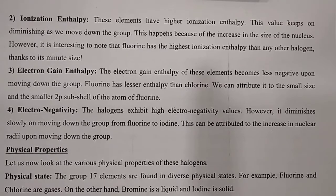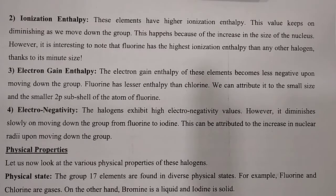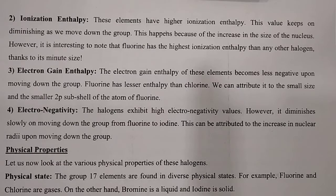Second point: ionization enthalpy. The minimum energy required to remove one electron from the valence shell is known as ionization enthalpy. These elements have higher ionization enthalpy, and this value keeps on diminishing as we move down the group because of the increase in the size of the nucleus. However, it is interesting to note that fluorine has the highest ionization enthalpy among all the halogens.